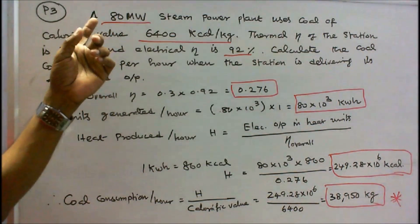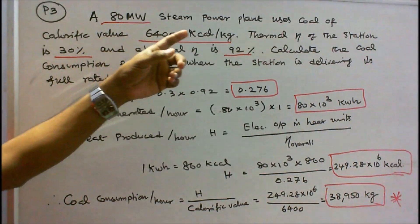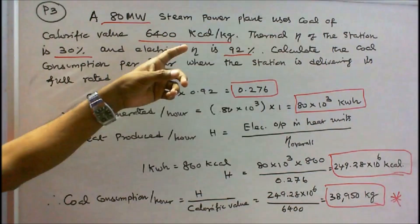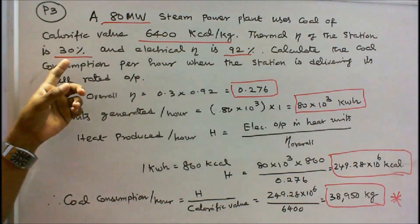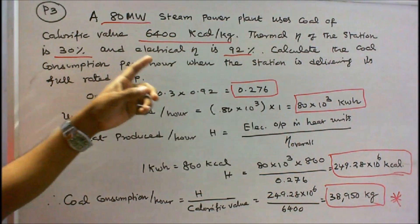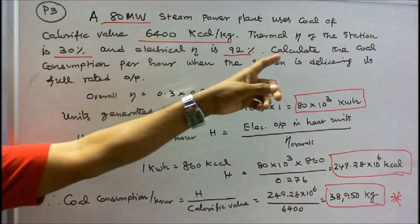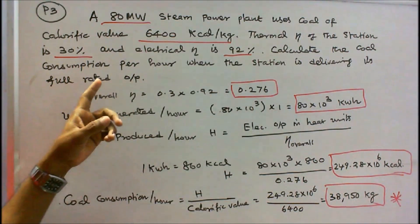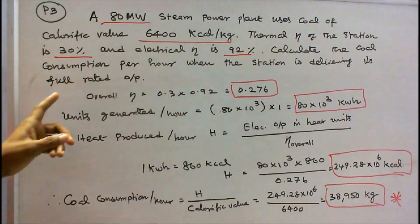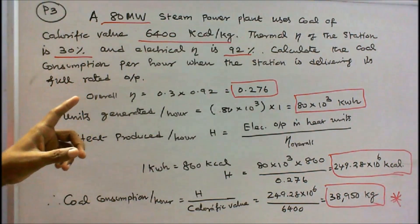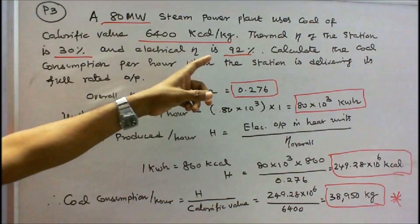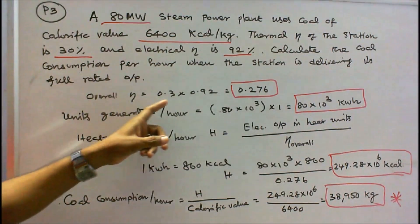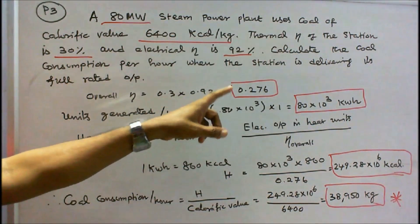Problem 3: an 80 megawatt steam power plant uses coal of calorific value 6400 kilocalories per kg. Thermal efficiency of the station is 30% and electrical efficiency is 92%. Calculate the coal consumption per hour when the station is delivering its full rated output. First step: overall efficiency = thermal efficiency × electrical efficiency = 0.3 × 0.92 = 0.276.